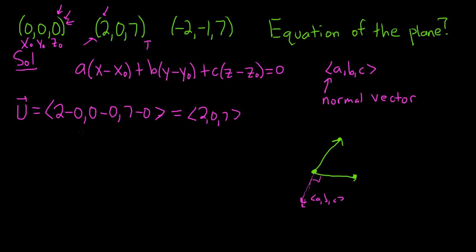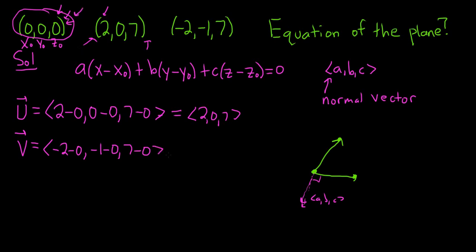For vector V, same thing — terminal minus initial — using the same initial point (0, 0, 0). It's a bit redundant here since it's zero, but in other problems the initial point might not be zero so you do have to subtract. So vector V is (−2, −1, 7). These two vectors lie on the plane.